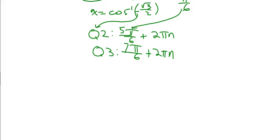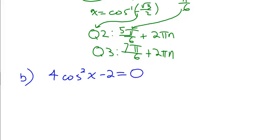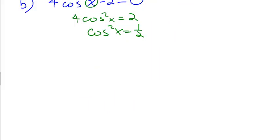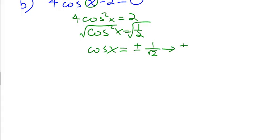Let's do it one more time. If I've got 4 cosine squared of x minus 2 equals 0 and I'm solving for x — there's a single x, so it's solvable. Add the 2 across to get 4 cosine squared of x equals 2, then divide by 4 to get cosine squared of x equals one half. Then square root both sides to get rid of the square: cosine of x equals the square root of one half, which rationalizes to plus and minus square root of 2 over 2.